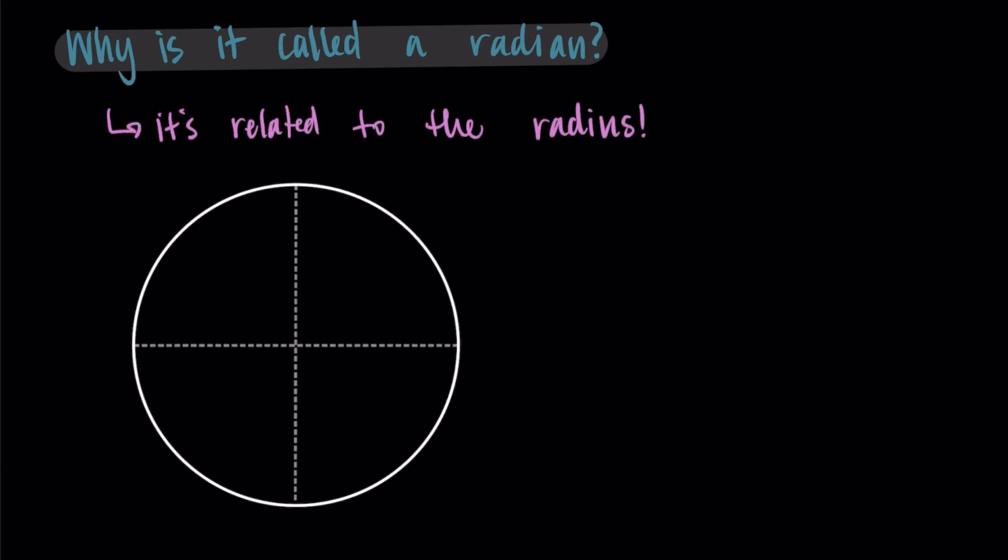If we think about a circle, a circle has a radius. That's the length from the center of the circle to the edge of the circle. And so the idea of a radian comes from taking that radius and drawing it along the arc of the circle.